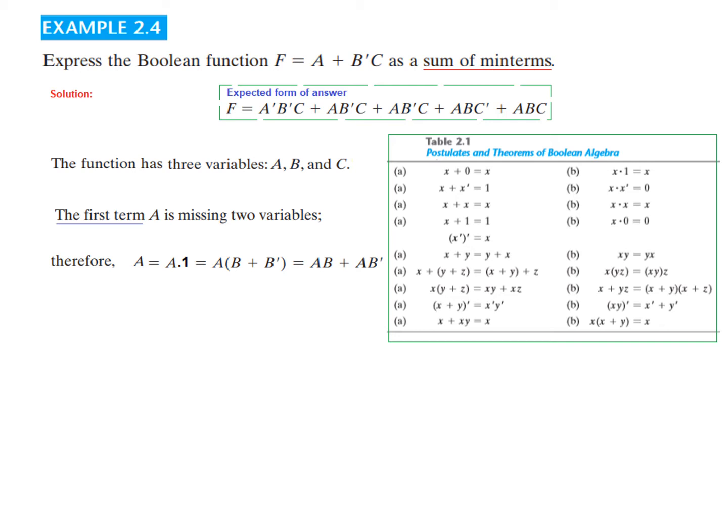We can write A is equal to A·1. So from this postulate x·1 is equal to x. So A·1 is equal to A. And then 1 can be written as B + B'. From here x + x' is equal to 1. Similarly B + B' is equal to 1. And now if you open we get this term AB + AB'.